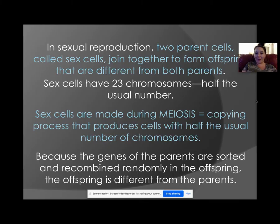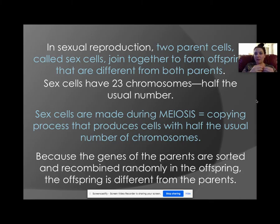In sexual reproduction, two parent cells called sex cells — sperm and egg — join together. Each sex cell only has 23 chromosomes, so when they combine you get 46 chromosomes, the 23 pairs. These sex cells are made through a different process: not mitosis, but meiosis.